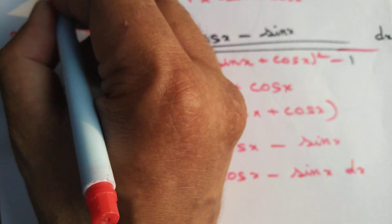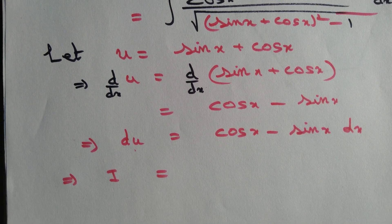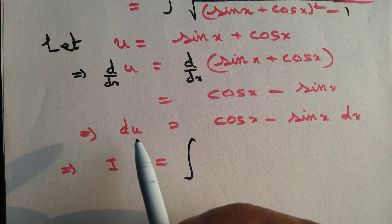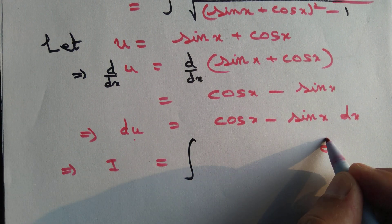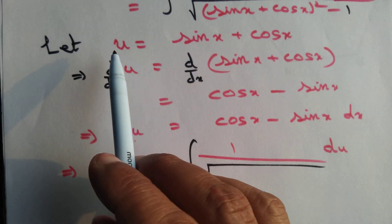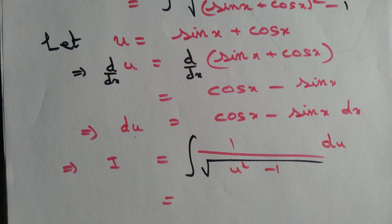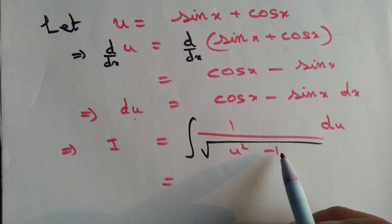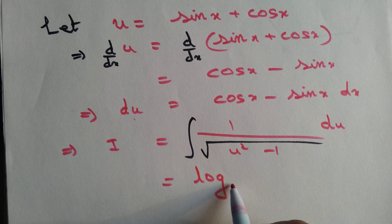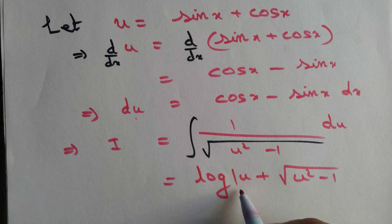Let I equal this integral. Then I equals the integral of du over the square root of (u² minus 1), since cos x minus sin x dx is just du and sin x + cos x equals u, giving u² minus 1 under the root. This is a standard integral: the integral of 1 over the square root of (x² minus a²) dx equals log of x plus the square root of (x² minus a²) plus a constant of integration.